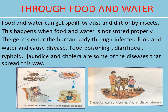Through food and water. Food and water can get spoiled by dust and dirt or by insects. This happens when food and water is not stored properly. The germs enter the human body through infected food and water and cause disease. Food poisoning, diarrhea, typhoid, jaundice and cholera are some of the diseases that spread this way.